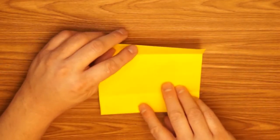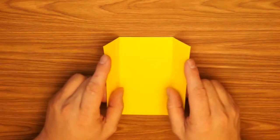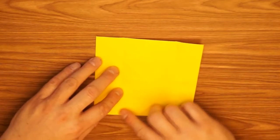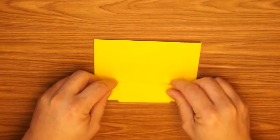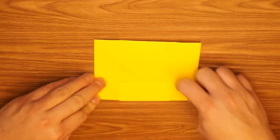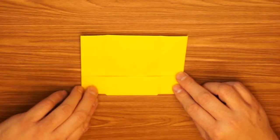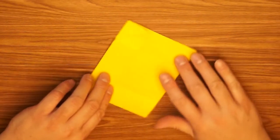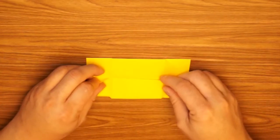Open this up. Turn it so these two creases are vertical and repeat the steps on the bottom and the top. So we're going to fold the bottom to the center going this direction. Spin it around and fold again the bottom to the center from this direction.